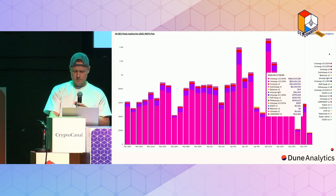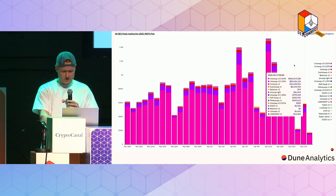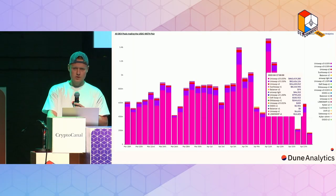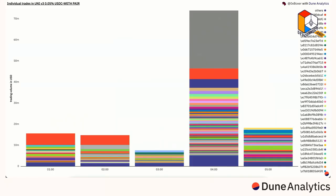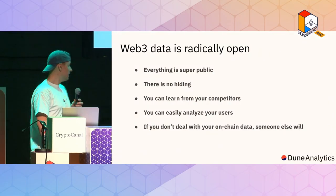We can look at all the way up at the entire DEX volume, or go all the way down to a single trading pair, and even look at things like Uniswap v3 fee tiers. The 0.05% tier is high up there, but surprisingly the 0.30% tier is still ranking second overall on that pair. This really shows how dominant Uniswap v3 is, especially in very liquid pairs. We can go even deeper and see individual traders from last night.